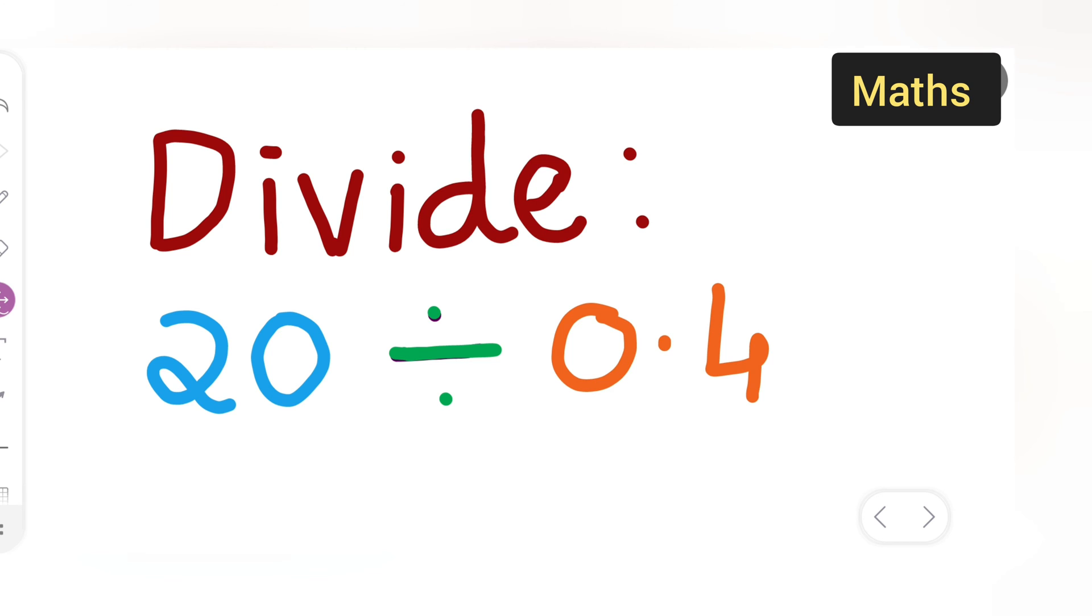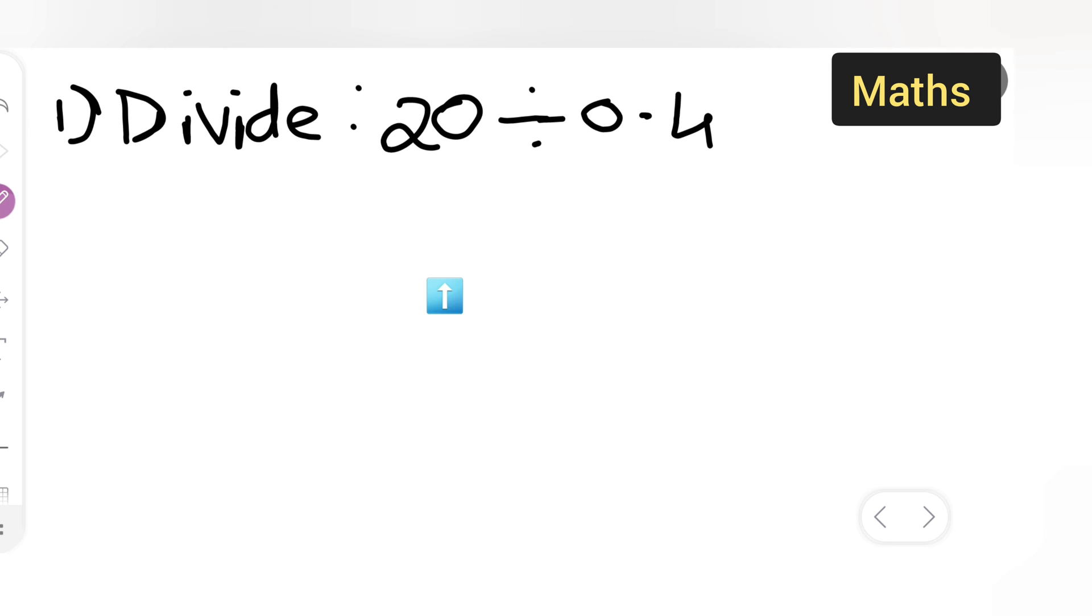Let us see how to divide 20 divided by 0.4. First, I can write down the step as it is, that is 20.